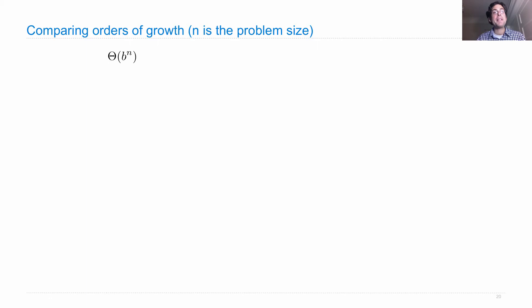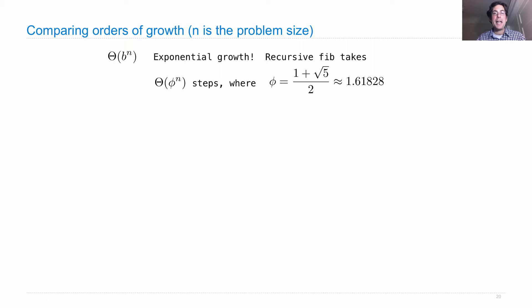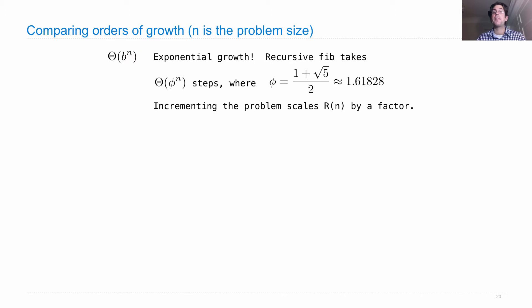If something is some base b to the n, even for a small base, that's exponential growth, which is very, very slow. Recursive Fibonacci without any memoization is one of these functions — it's actually 1.618 to the n. What that means is that incrementing the problem, so computing just the next Fibonacci number, scales the entire resources by a multiplicative factor. It takes much more in order to do just one more problem size. And that's what exponential growth really means.